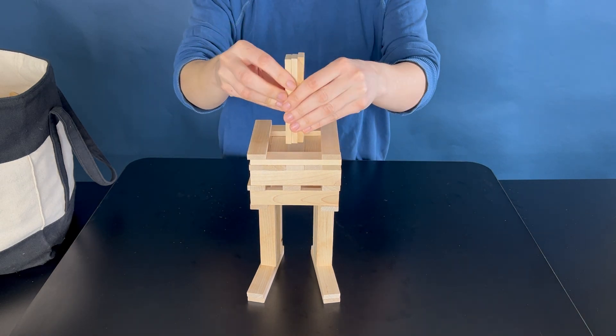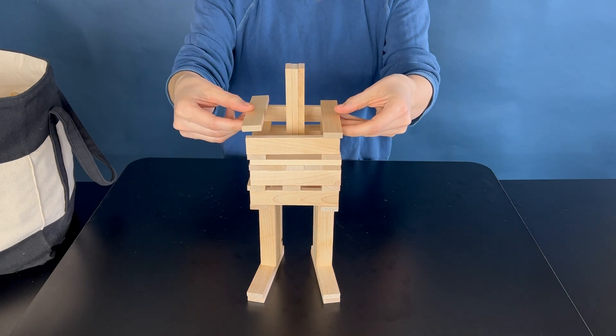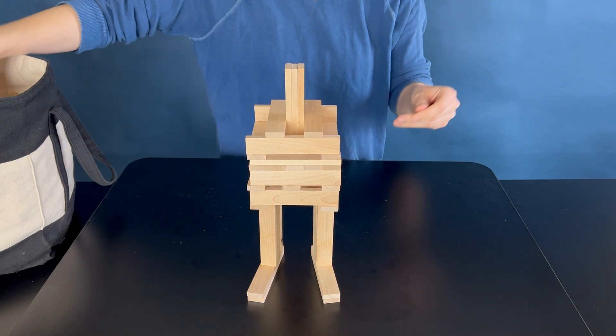When you get to halfway up the body, you want to make sure you do have a plank that you can rest the three planks in the middle for that neck.